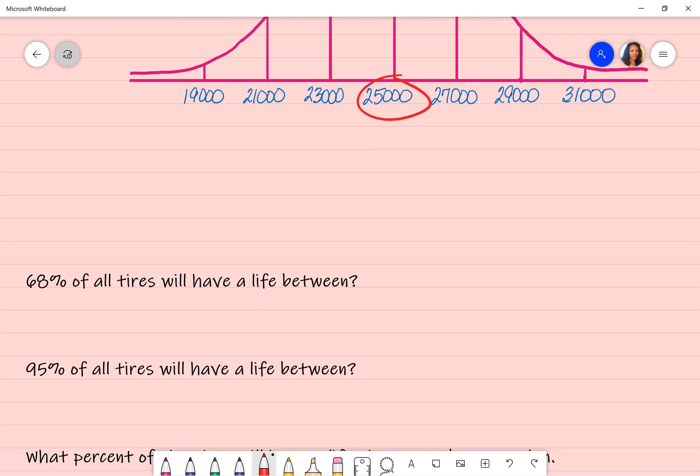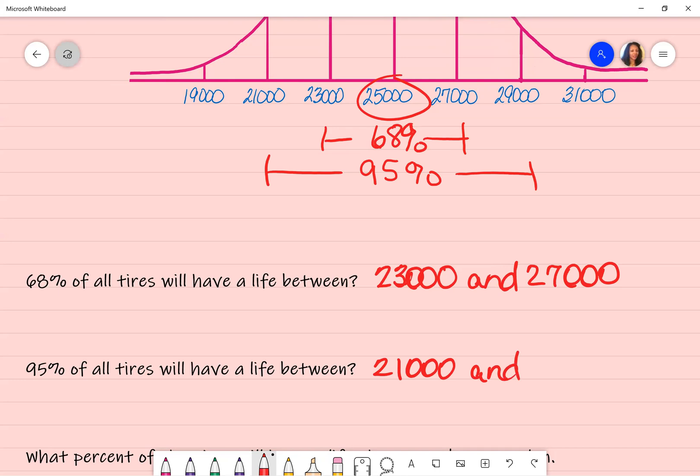So 68% of the tires will have a life between what? This is my mean. I was just told with my empirical rule that one standard deviation away from that mean represents 68% of my data. So therefore, the answer to this is 23,000 and 27,000. And then the next question asked me about the life between, 95% of all tires will have a life between what? So my mean, again, is in the middle, two standard deviations in either direction represents 95% of the data. So therefore, this is my answer. It's going to be 21,000 and 29,000.